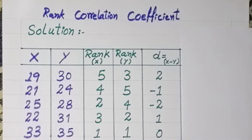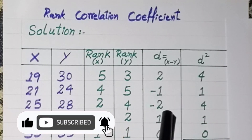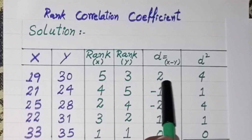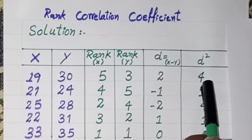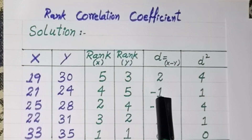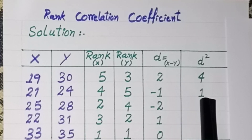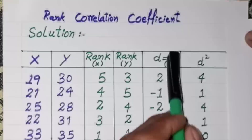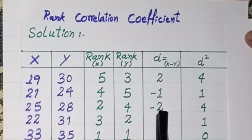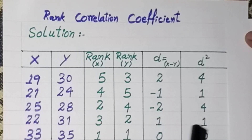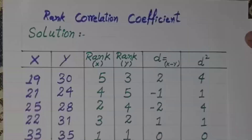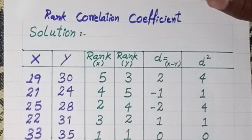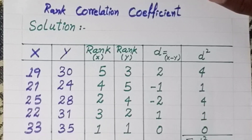Next, we calculate the d² column by squaring each value of d. The first d value is 2, so d² = 4. The next d value is −1, so d² = 1 — because when two minus signs multiply, the result is positive. The next d value is −2, so d² = 4. The square of 1 is 1, and the square of 0 is 0. Adding all d² values gives us Σd² = 10.